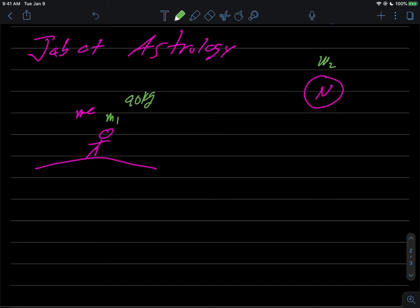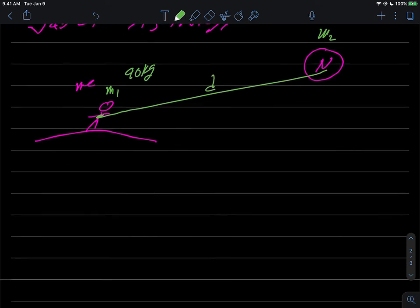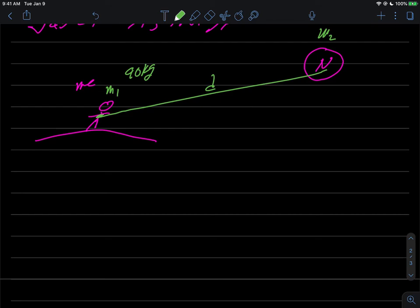Neptune has a mass, it's much much larger than mine. I don't even know what it is offhand but we could look it up. And of course no matter what there's always going to be some distance between me and Neptune. So if I wanted to I could calculate the gravitational force between me and Neptune using just the law of gravity.